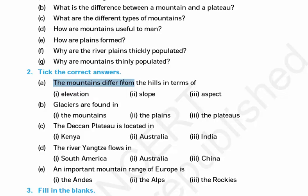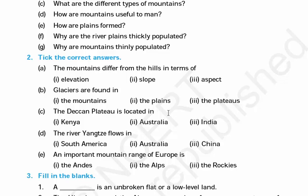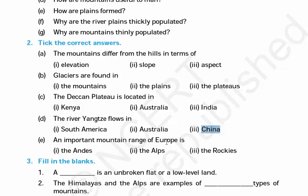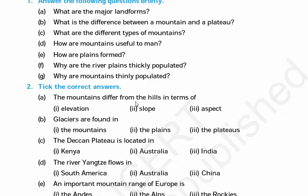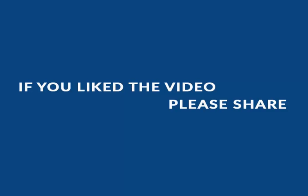Mountains differ from hills in terms of elevation — it is easy to climb a hill but difficult to climb a mountain. Glaciers are found in mountains because the higher you go, the colder the place is. The Deccan Plateau is located in India. The river Yangtze flows in China. An important mountain range of Europe is the Alps. The Andes is located in South America. With this, we have come to an end of another chapter in geography. Thank you for listening, and I hope you found this useful. Make sure to subscribe. Bye.